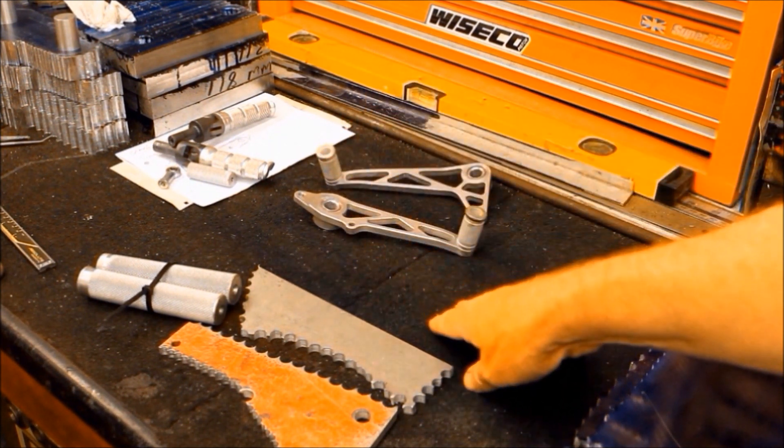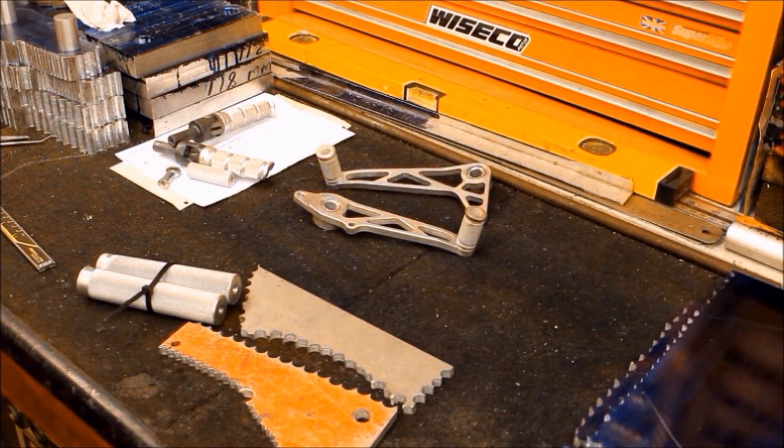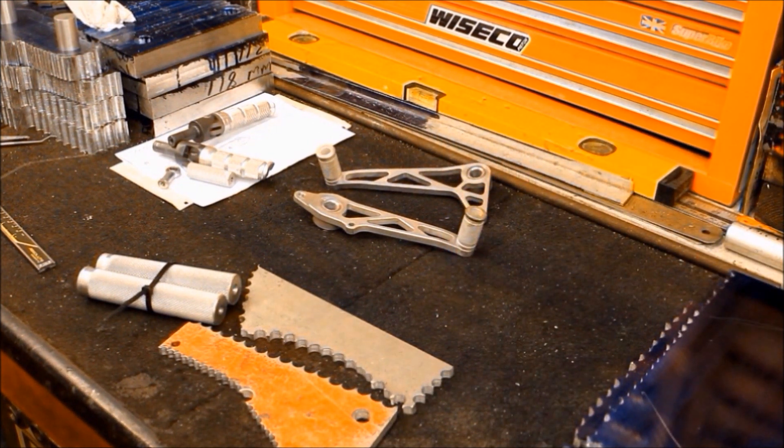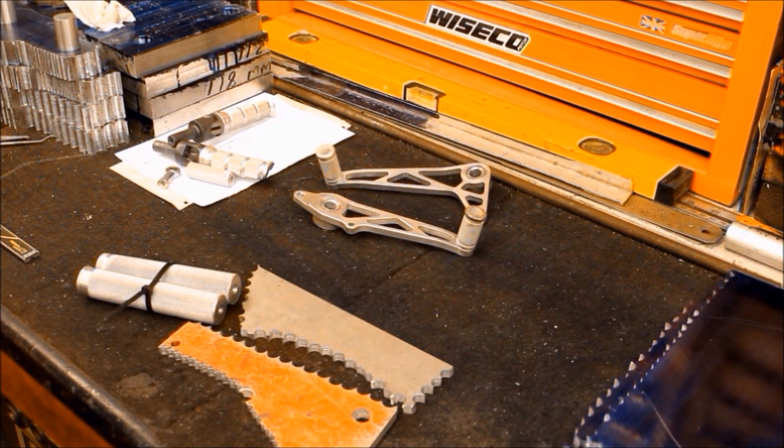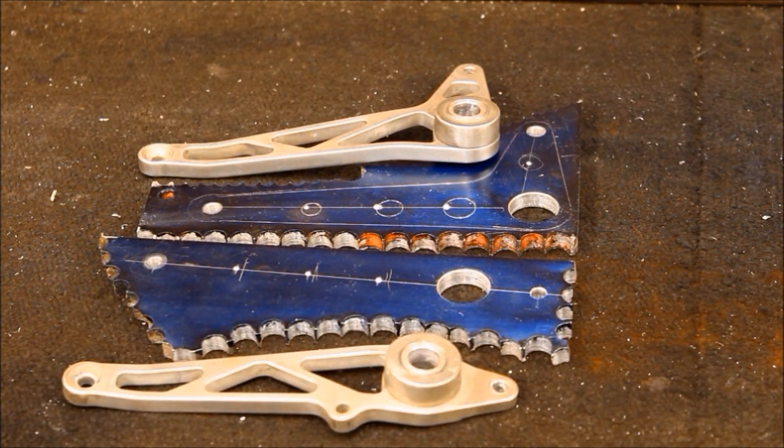These levers and pegs are now spare, so they might end up on your Kawasaki Unitrack project. Possibly, we shall do a deal, we shall do a swap. That's a good start. Now it's time to drink some more tea.